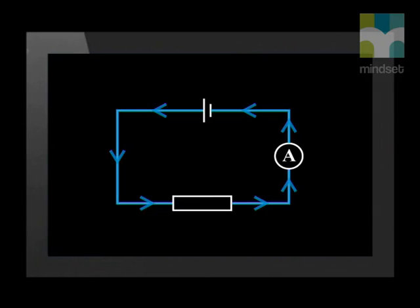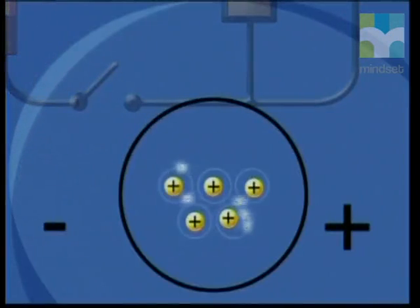This energy causes electrons in the conducting wire to move around in a closed circuit. The movement of negatively charged electrons is called current. However, for charge to flow there needs to be a potential difference between two points in a circuit. Charge moves from a point of high potential energy to a point of low potential energy.